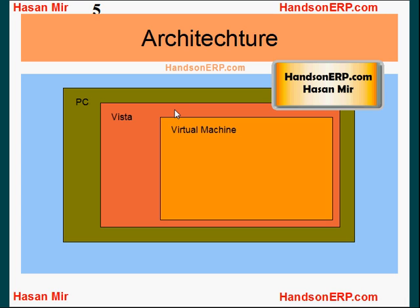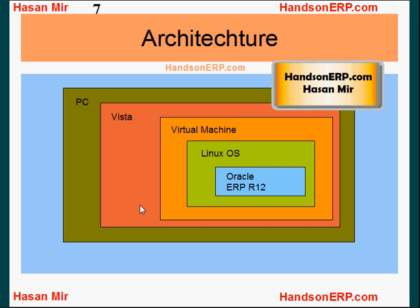So what we're going to do is go with an operating system that is free and yet compatible with Release 12 of Oracle ERP. We're going to go with Linux. We'll install a virtual machine on top of Vista, and within the virtual machine we'll install Linux — specifically Oracle's Linux — because this works very well with the E-Business Suite software. Once we have Oracle Linux up and running on the virtual machine, we'll install Oracle ERP on top of Oracle Linux.